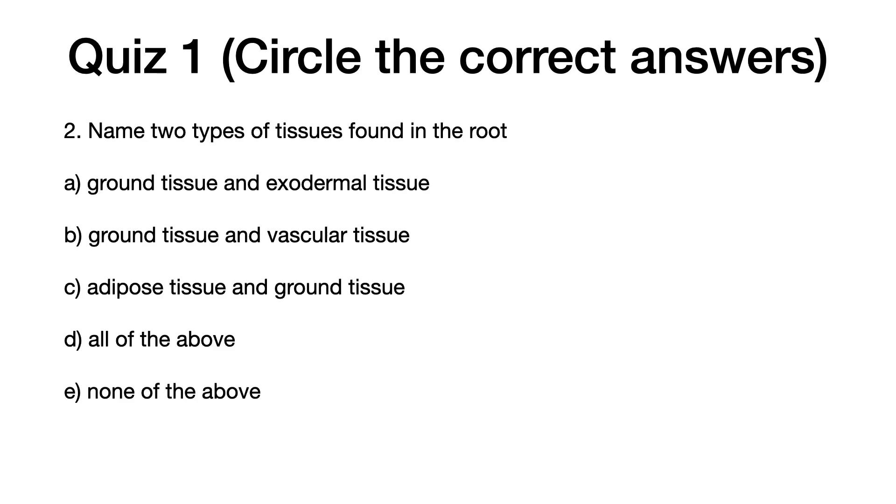Question two: Name two types of tissues found in the root. A: ground tissue and exodermal tissue. B: ground tissue and vascular tissue. C: adipose tissue and ground tissue. D: all of the above. E: none of the above. The correct answer is B, ground tissue and vascular tissue.